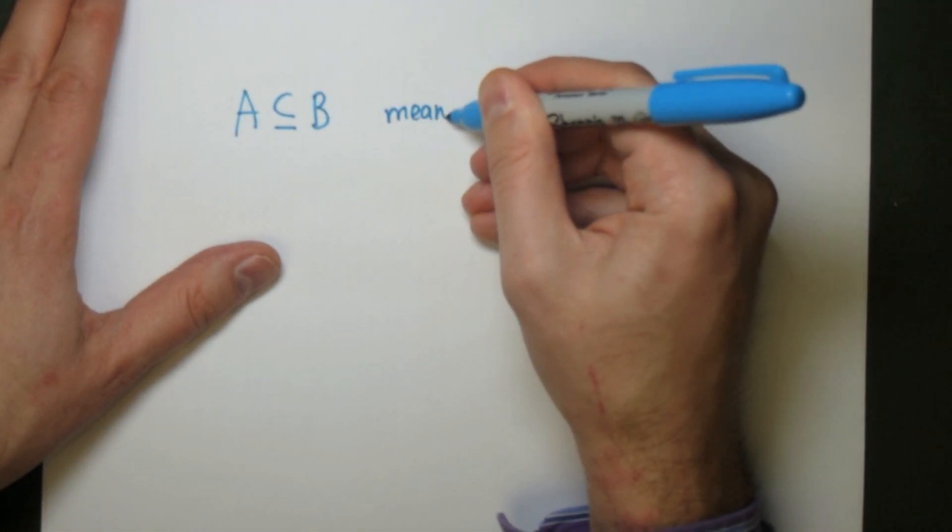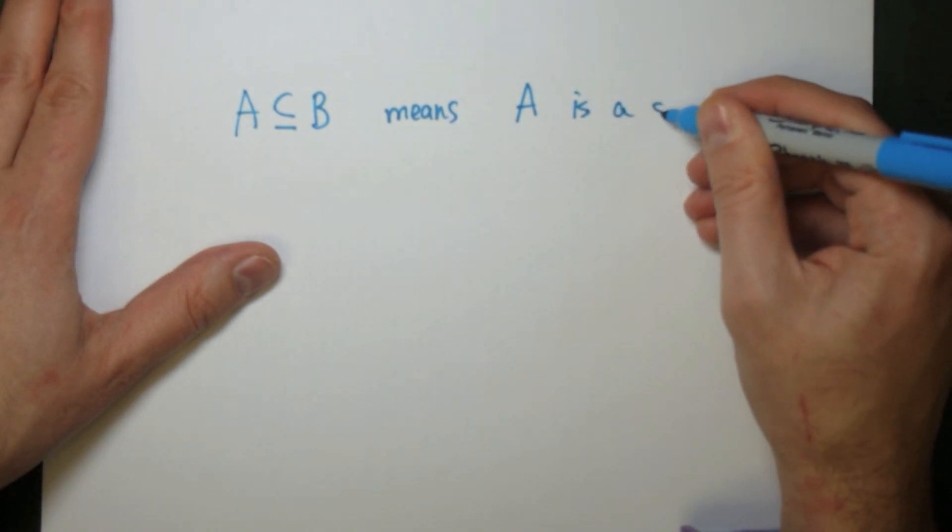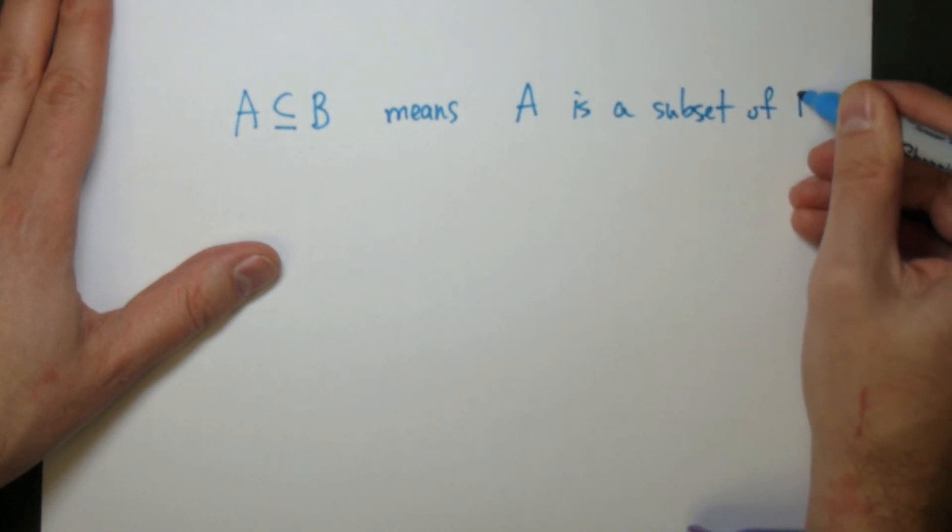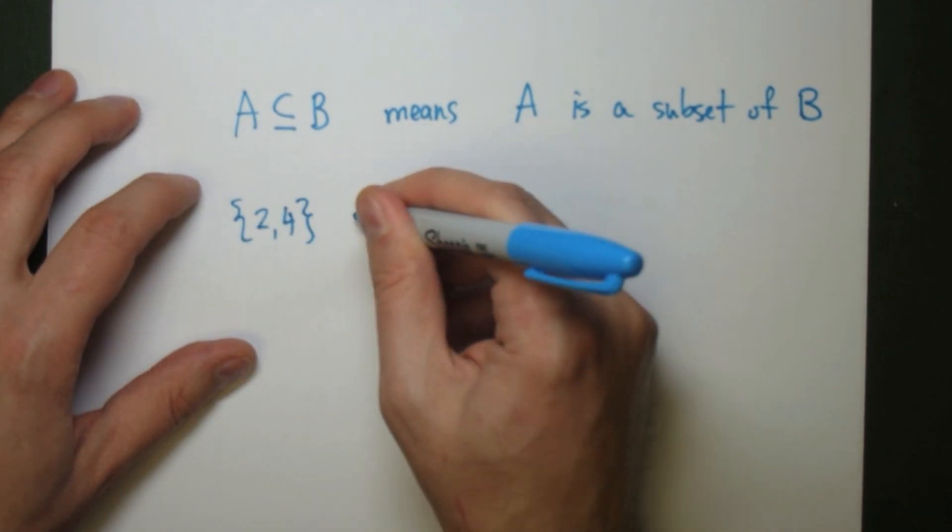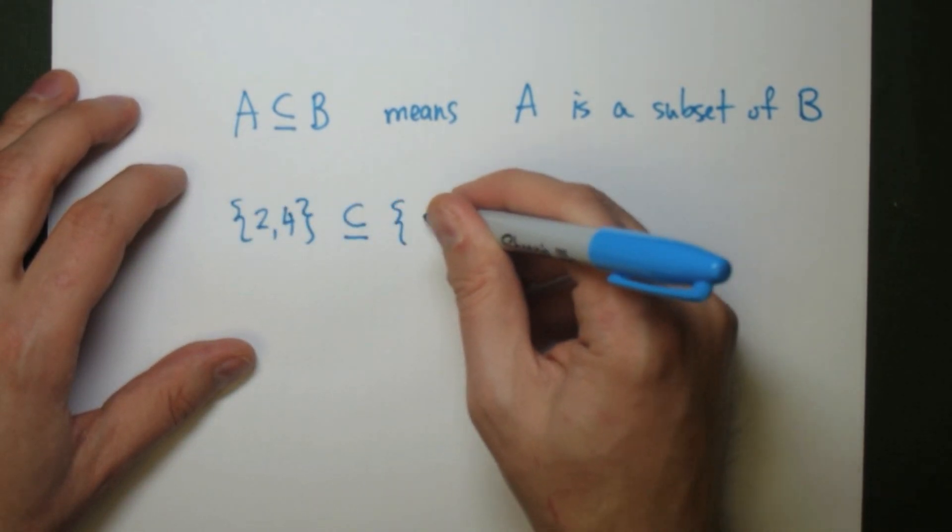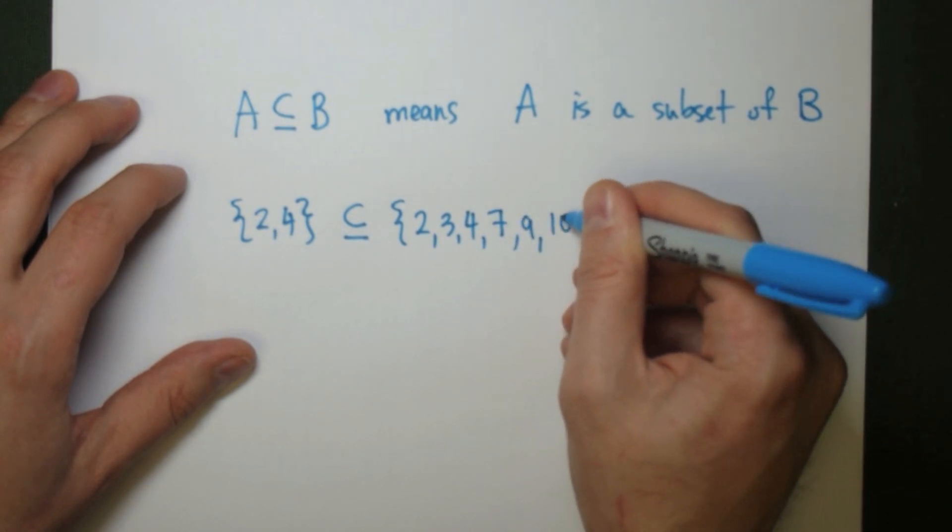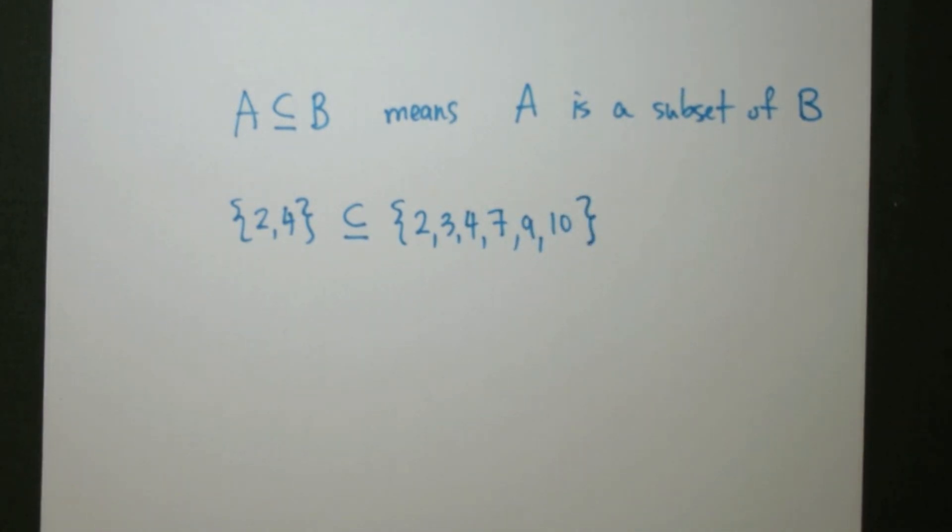We use this symbol to mean the subset of another set. So A is a subset of B is written like this. As an example, the set containing the elements 2 and 4 is a subset of the set containing the elements 2, 3, 4, 7, 9, and 10.